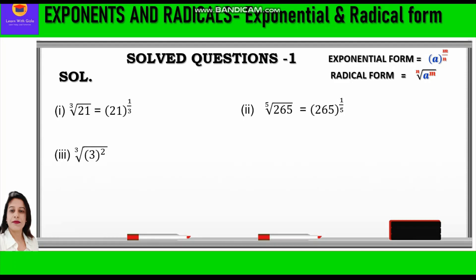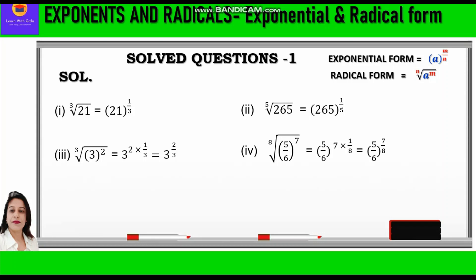Third question: cube root of 3 squared. The square is the power of 3, so it comes in the numerator, and the root is 3, so it comes in the denominator. We write 3 squared times 1 by 3, which equals 3 raised to power 2 by 3. Fourth question: 8th root of (5 upon 6) raised to power 7. Here 7 is the power and 8 is the root, so we write (5 upon 6) raised to power 7 times 1 by 8, which equals (5 upon 6) raised to power 7 by 8.